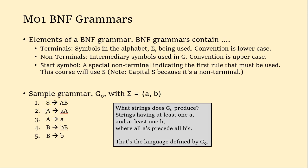If we have a capital A, we have two choices: we can replace it with lowercase a followed by capital A — that's the terminal A followed by the non-terminal capital A — or we can just replace it with lowercase a, the terminal. Rules two and three are very common; they allow you to make strings of A's for as long as you want. Rules four and five do the same thing with B's — we can replace B with lowercase b capital B, meaning we keep making B's, and when we're done, we replace B with b.